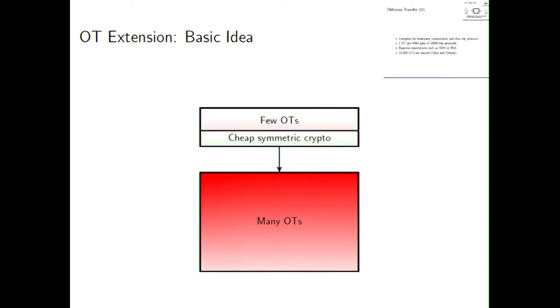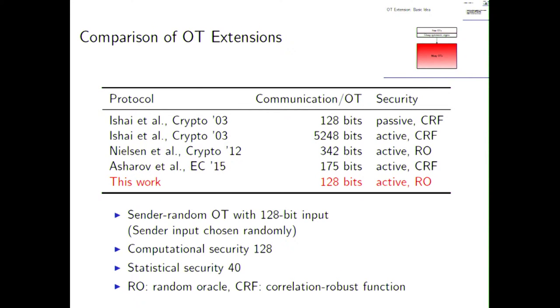And this is essentially the idea of OT extension. So you start out with a few OTs, add some cheap symmetric crypto, and as an output you get many OTs without running the actual OT protocol again, so no public key crypto at that stage. And this was brought up by Shai et al. at Crypto 2003, and they proposed a passively secure, honest but curious construction, which is secure against an honest but curious adversary.